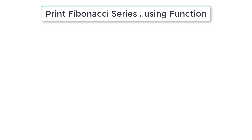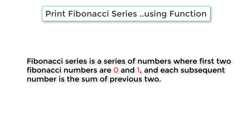Let's write a C program to generate Fibonacci series up to a user-entered limit. Fibonacci series is a series of numbers where the first two Fibonacci numbers are 0 and 1, and each subsequent number is the sum of the previous two.